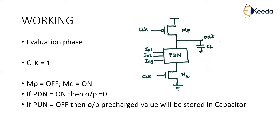Now comes the evaluation. If the inputs to the pull-down network are on, the PDN turns on. Since the evaluation transistor ME is already on (clock=1) and the PDN is also on, there is a path for the output to discharge toward ground.